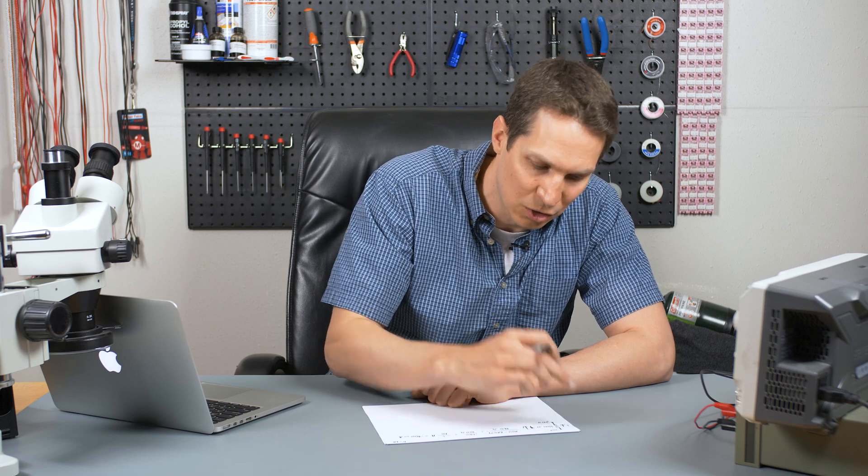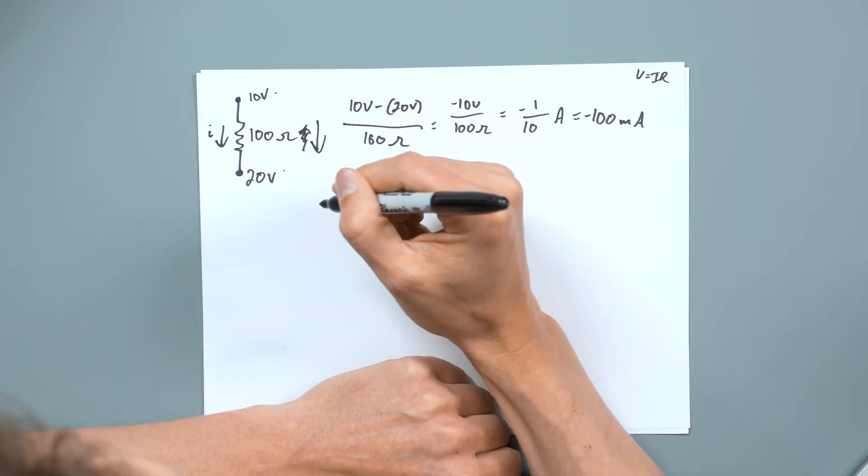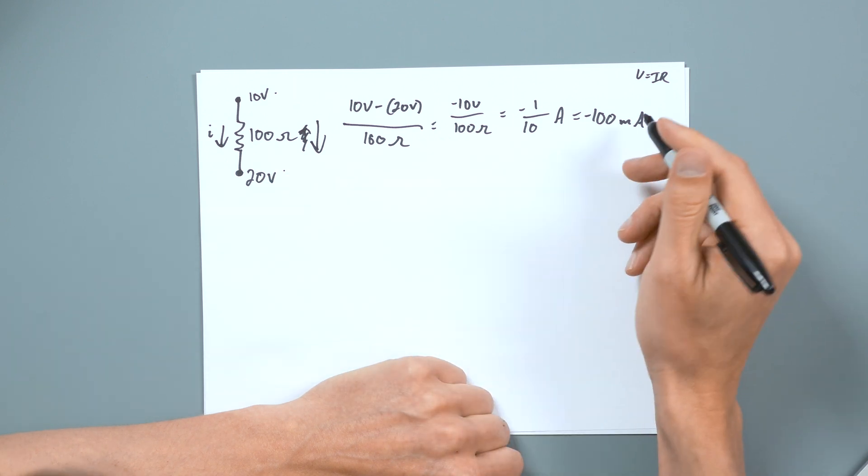So what you do is you set up the equation, you look at it, you say, Hey, this is the way it's going to be. And then I'm just going to take the signs as I go.